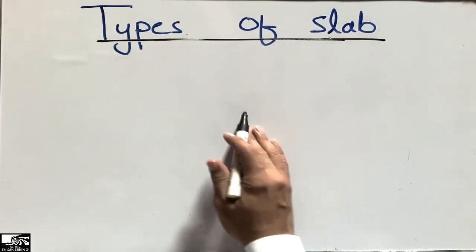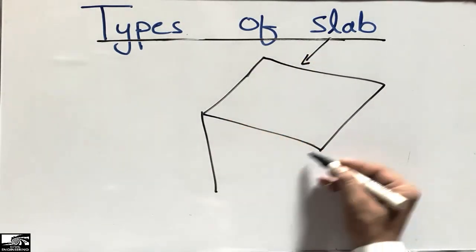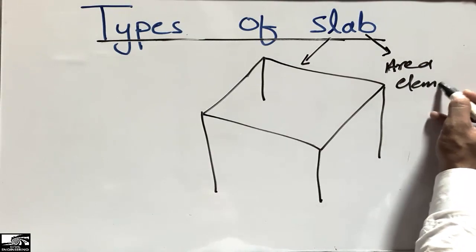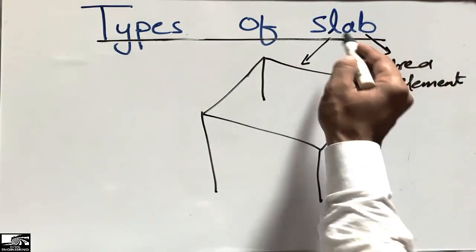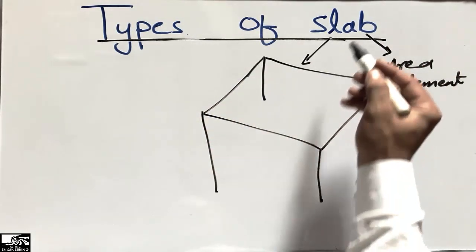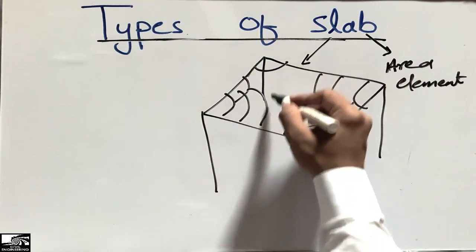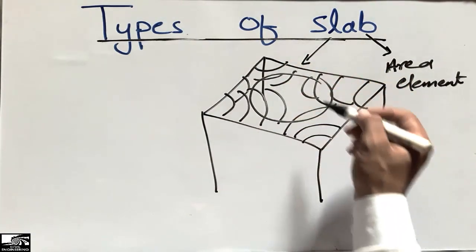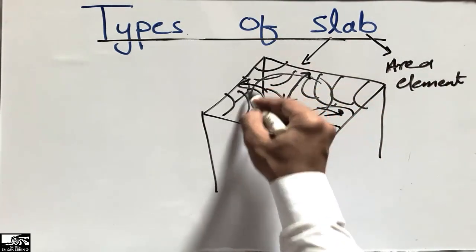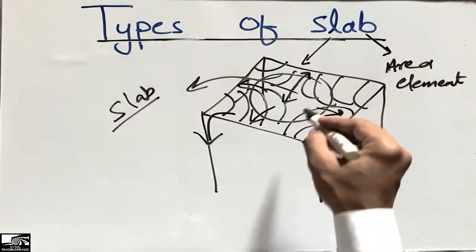First of all, to define the slab: a slab is a horizontal flexure member like a beam, but a beam is a line element while a slab is an area element. It also possesses bending moments like the beam. In an RCC frame structure, the slab is the portion which supports the load from all sides — loads of furniture, loads of people moving inside the building. The slab transfers the load into the beams, and from the beams it transfers the load into the columns.